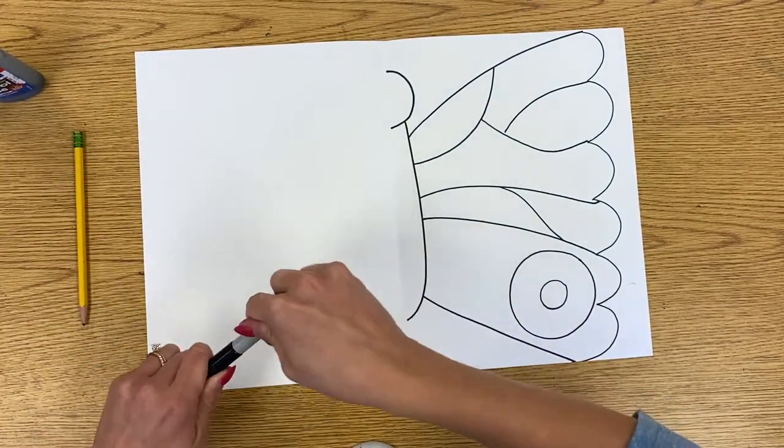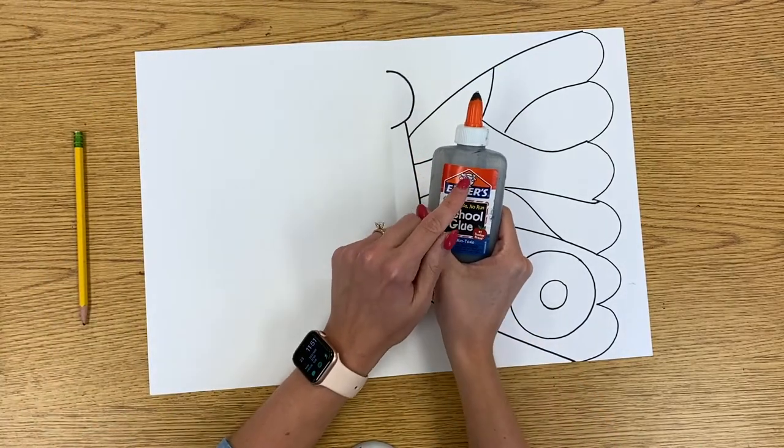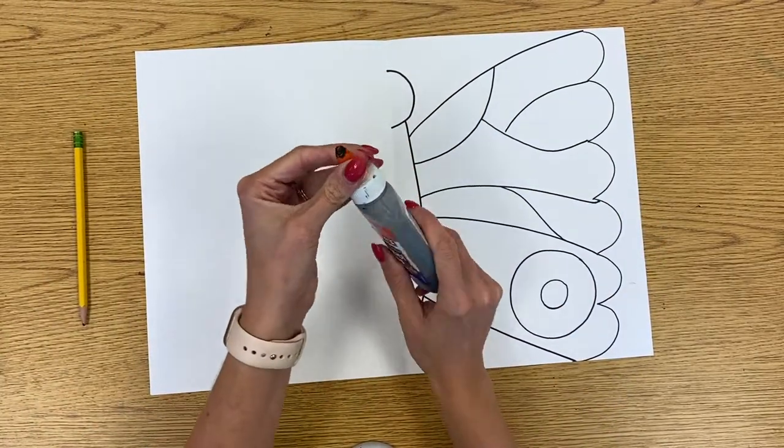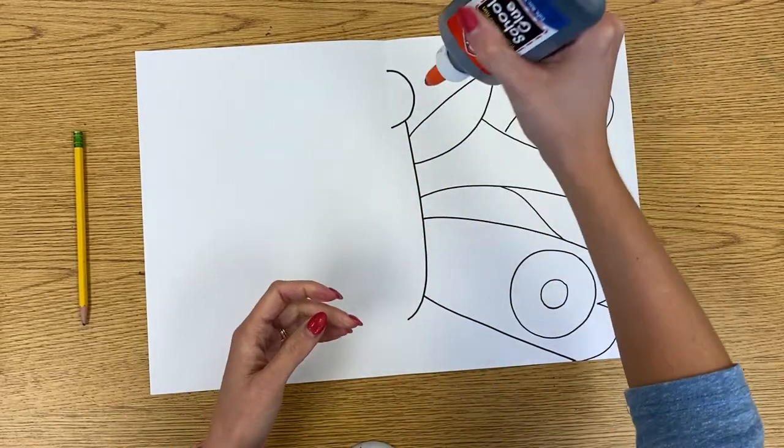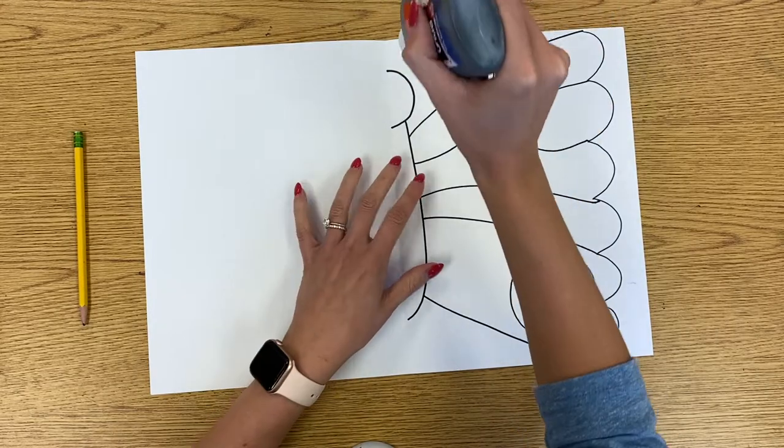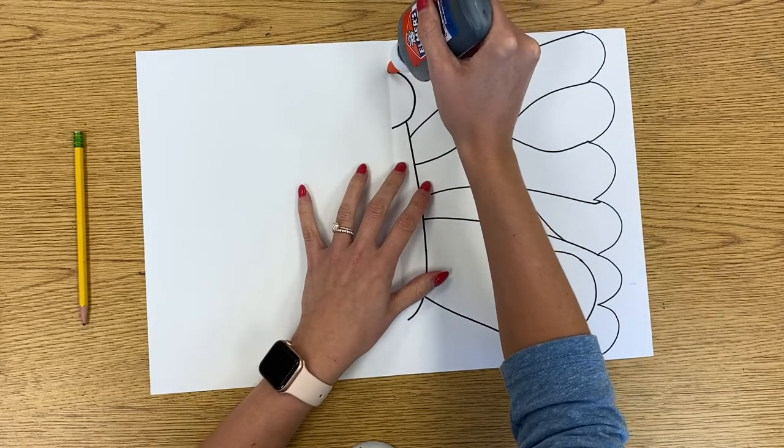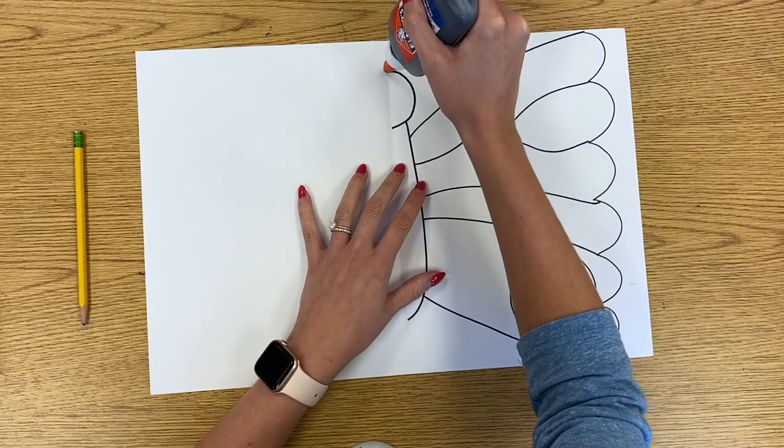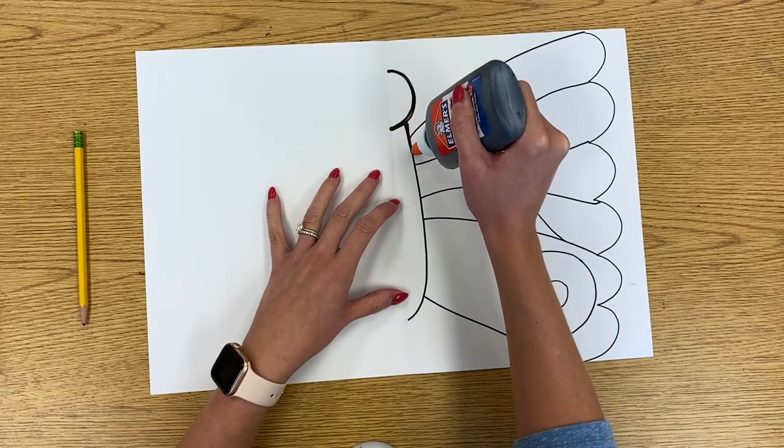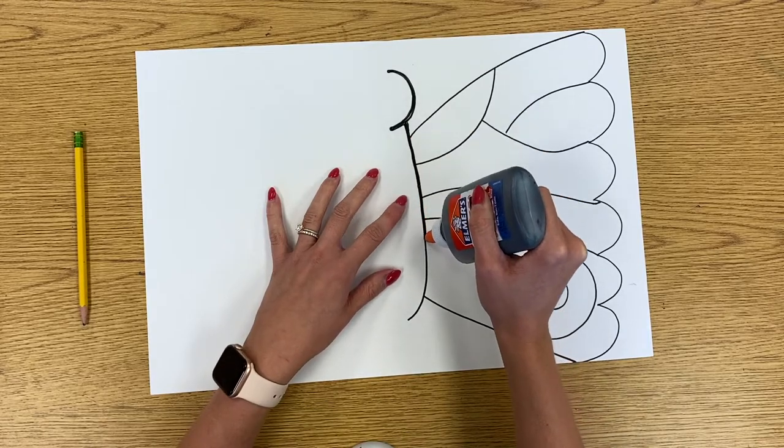And then when you are finished, we are going to be tracing all of our lines with our liquid black glue. So I am going to very, very gently, very gently squeeze my glue onto my lines that I just made. I'm going to trace all of the lines that I drew.